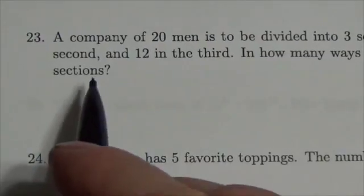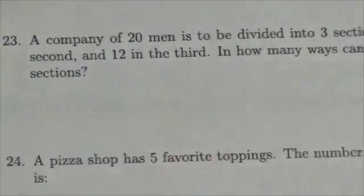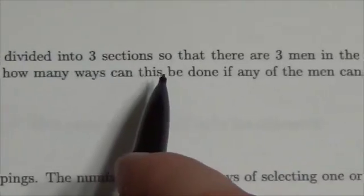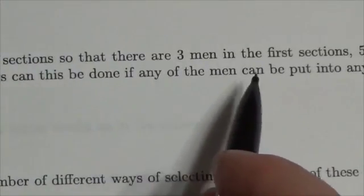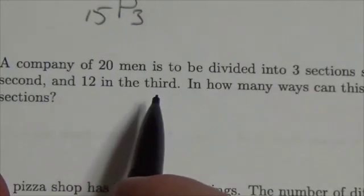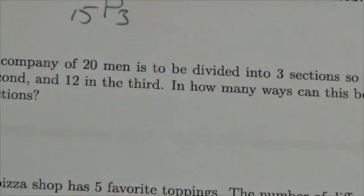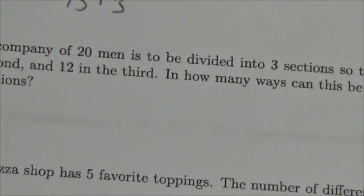Hey everyone. In this question, we're told that a company of 20 men is to be divided into three sections so that there are 3 men in the first section, 5 in the next, and 12 in the third. How many ways can this be done if the men can be put in any section?